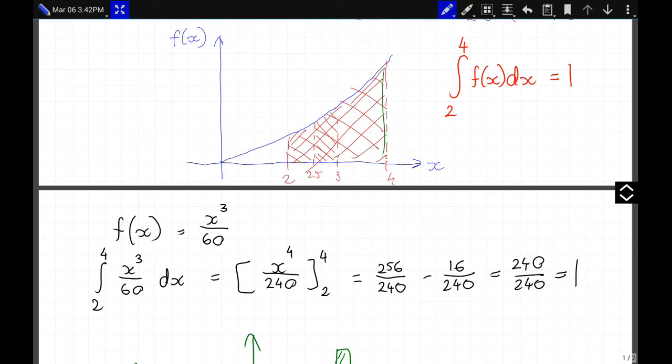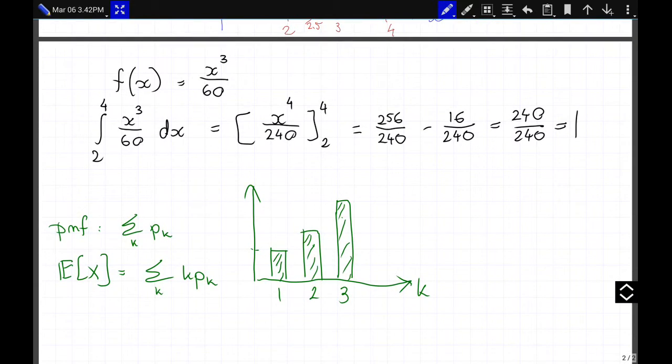And now those have to add up to 1 just like we had the area under the graph in the continuous case had to be equal to 1. So say this is 0.2, that's going to be 0.3 and this will be 0.5. And now the expected value is 1 times 0.2, then 2 plus 2 times 0.3 plus 3 times 0.5.